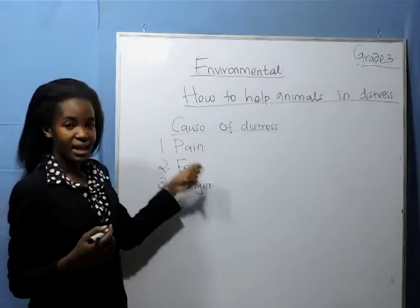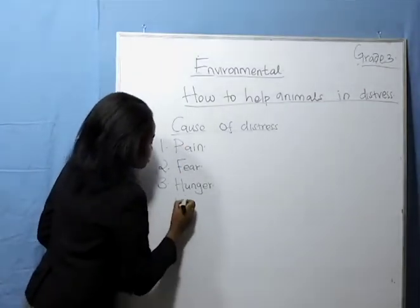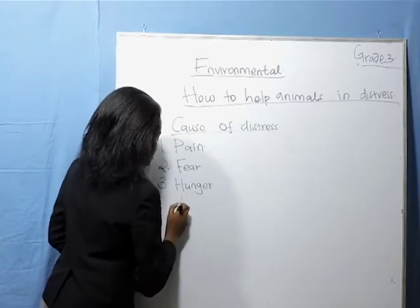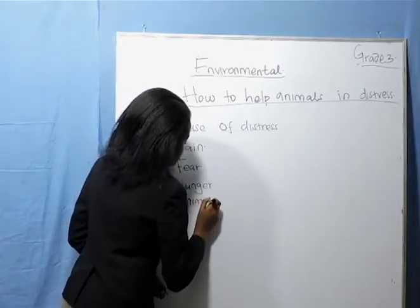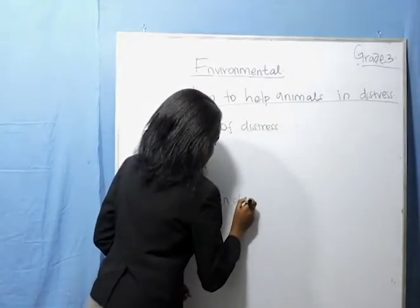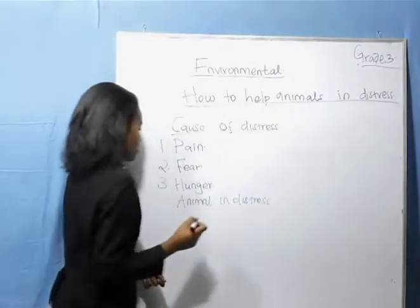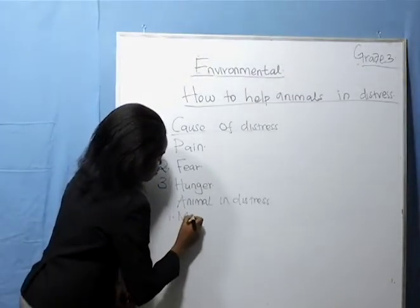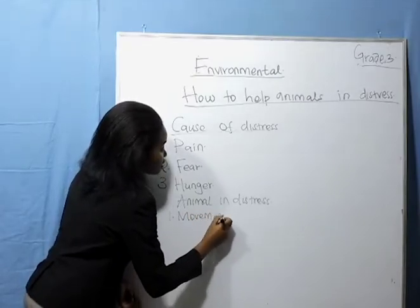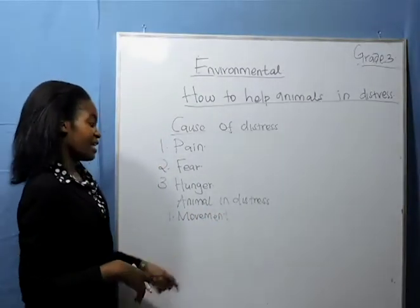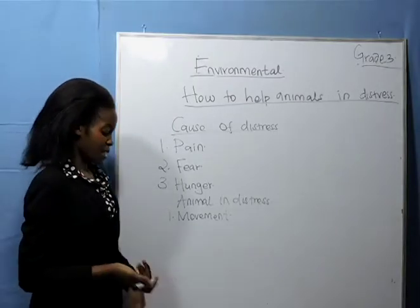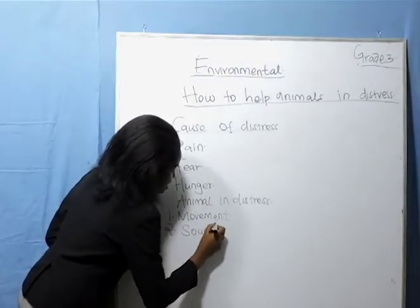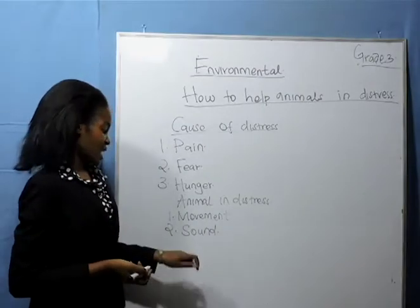Now, how will you know that the animal is in distress? First, you will watch their movement — how they are moving. There are some animals that move in a suckle way, to show that they are in distress, for example the sheep. Another sign is the sound that they will produce, which shows that the animal is in distress.